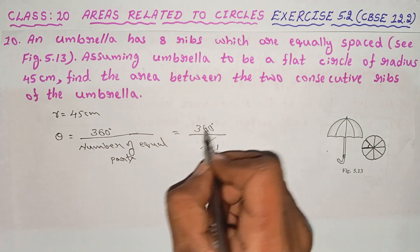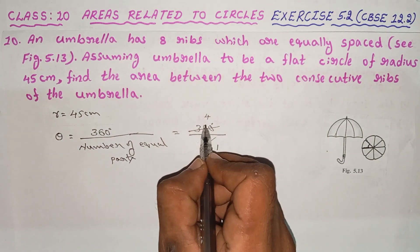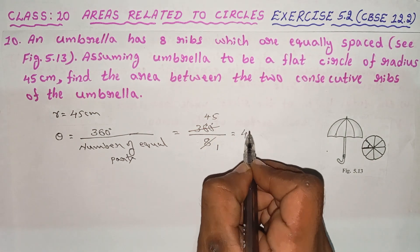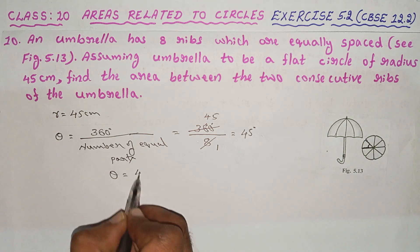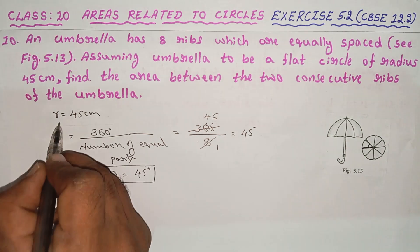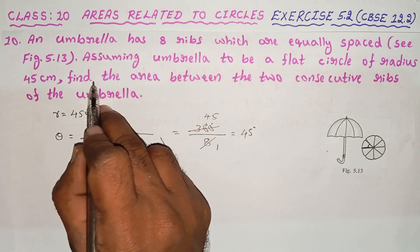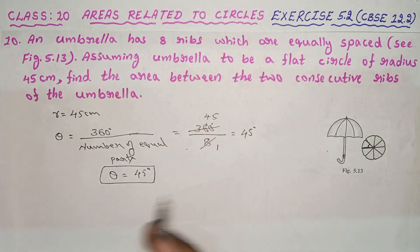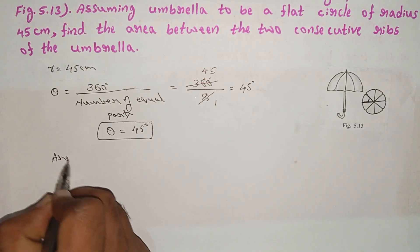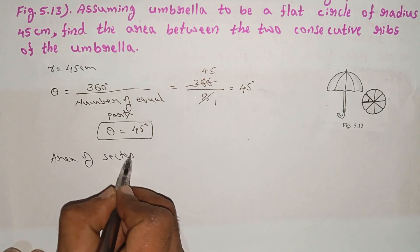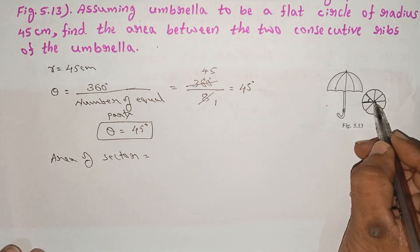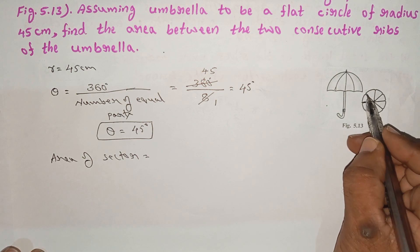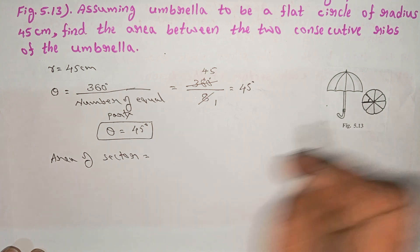360 divided by 8 equals 45. So theta is equal to 45 degrees. To find the area between the 2 consecutive ribs, we find the area of the sector. Area of sector is the area of the rib space.